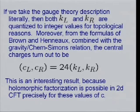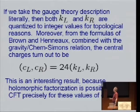If we take the gauge theory description literally, then both K_L and K_R are integers, and from the formulas of Brown and Henneaux and the mapping between gravity and Chern-Simons theory, we can calculate the central charges, and they're multiples 24 times integers.